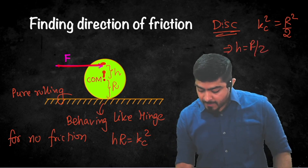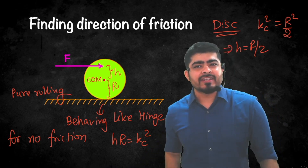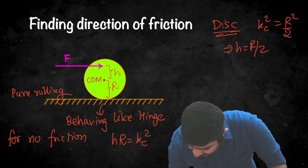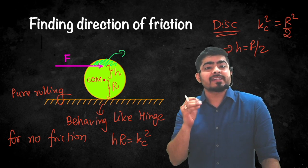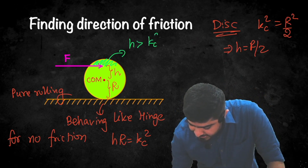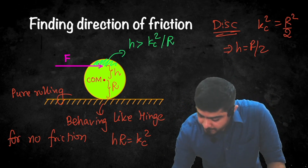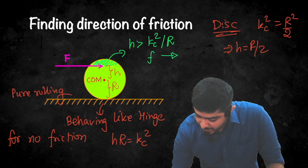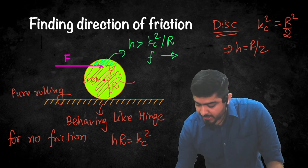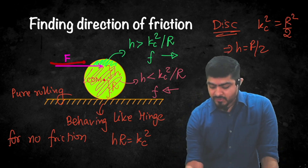If the applied force is above the sweet spot (h > kc²/r), the force is away from the hinge, so friction acts in the same direction as the applied force — if force is towards right, friction is also towards right. Conversely, if the force is below the sweet spot (h < kc²/r), friction acts opposite to the applied force — if force is towards right, friction from the ground acts towards left.